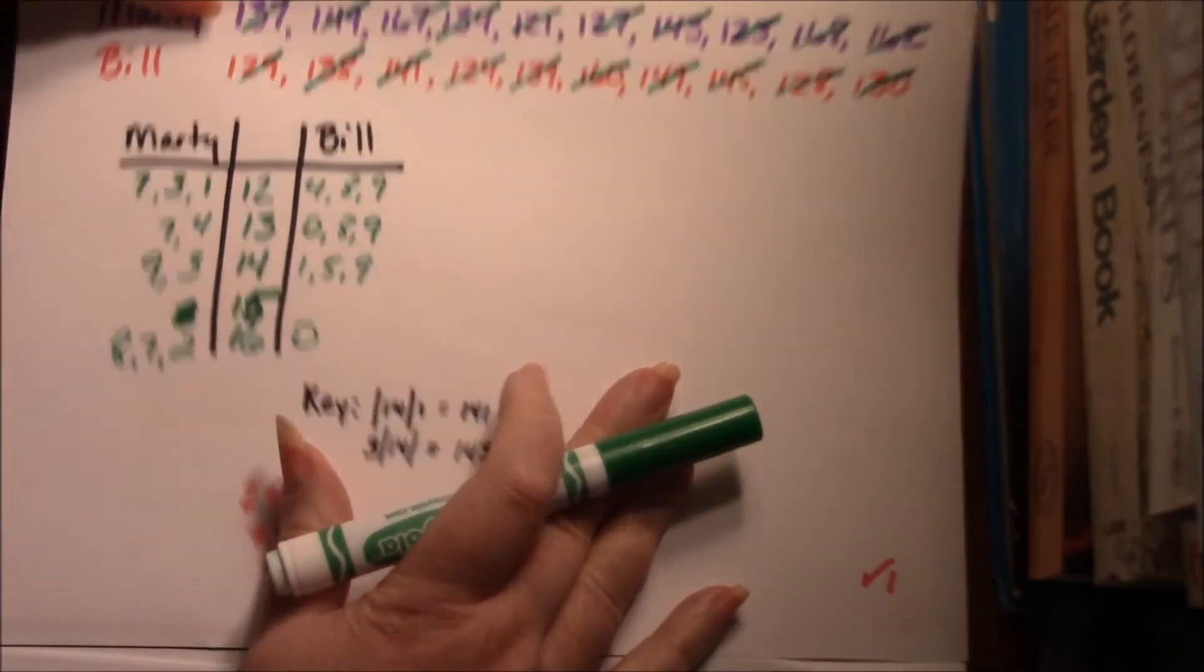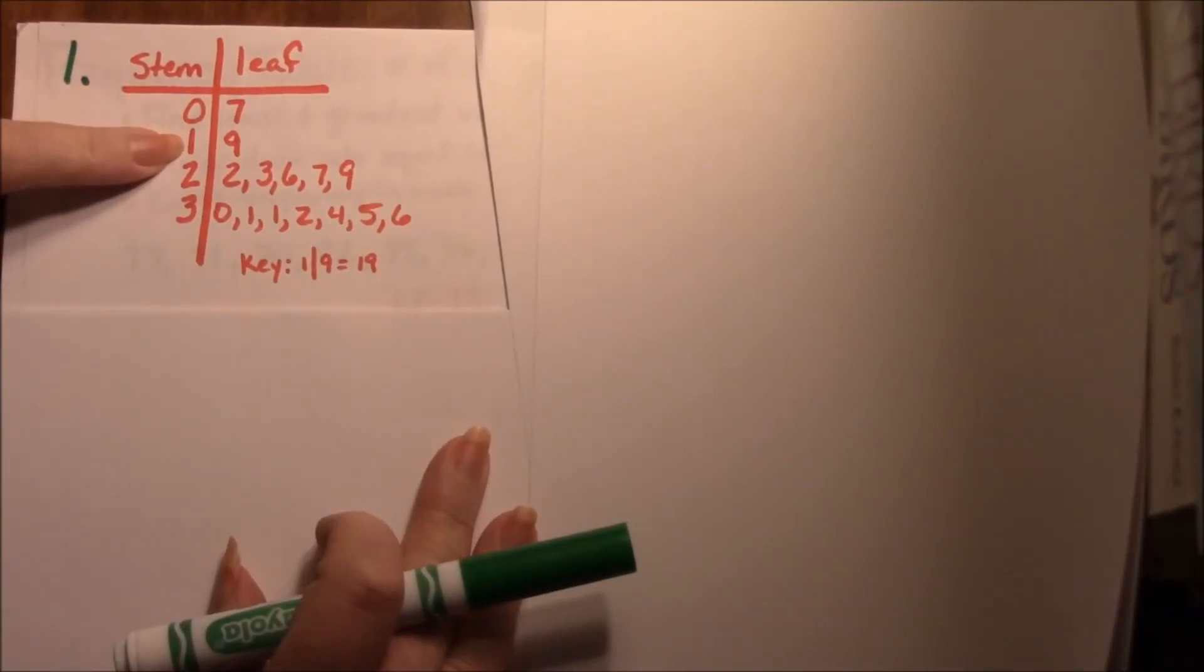Otherwise it's pretty straightforward. Go ahead and try checkpoint number one on the bottom of page 709. Pause here, come back when you're done. You should have a stem and leaf plot with 0, 1, 2, and 3 with your numbers all in order and a key.